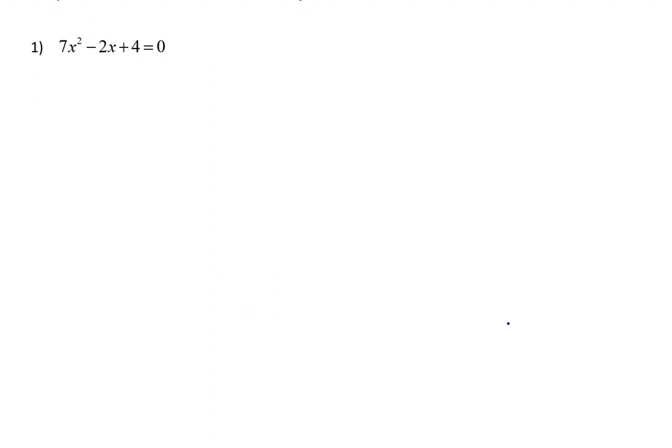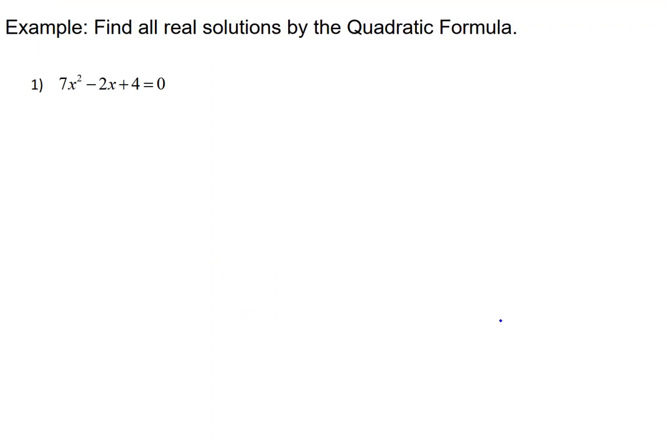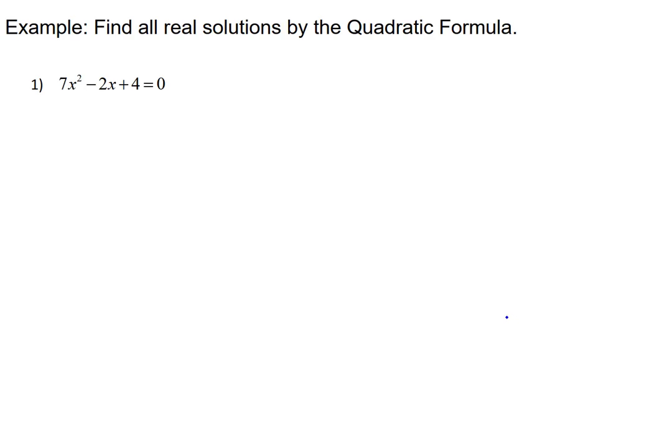So in our next and last example for this topic, we're going to find all real solutions by the quadratic formula. And so we'll bring that into play. We have to identify what a, b, and c are. They're 7, -2, and 4. And so using the formula, which, yes, you do have to have memorized, it should equal x,